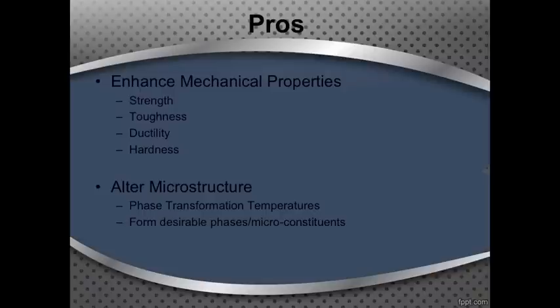There are many advantages to alloying your steel. The primary reason that anyone adds any alloying elements to their steels is to enhance some sort of property, whether it's a mechanical property or a microstructure. Among the mechanical properties that can be enhanced is the strength, toughness, ductility, or hardness. These properties can be increased or decreased depending on the element that's added and the amount added. Among the microstructural properties that can be changed is the phase transformation temperatures, or it might even form a desirable phase or micro constituent that you're trying to form.